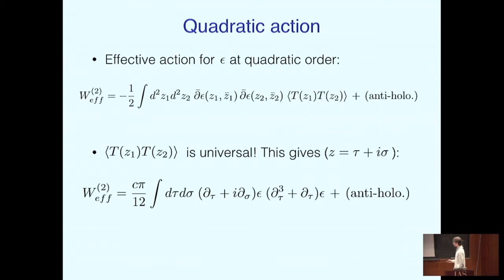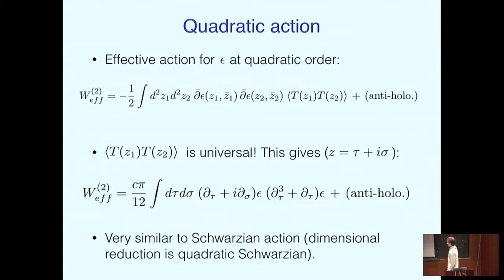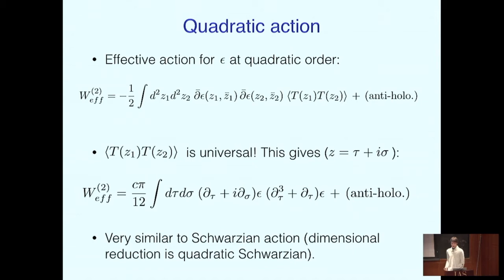At least perturbatively, if I write down the resulting effective action at second order, I have two insertions of the anti-holomorphic derivatives of epsilon, each coming with a stress tensor. The quadratic action for these reparametrization modes is determined by the two-point function of the energy-momentum tensor, which is universal and fixed by conformal symmetry. This effective action turns out to be a local action, and it looks very familiar because it almost looks like the Schwarzian action. If you drop the sigma derivative — naive dimensional reduction — this is precisely the quadratic approximation to the Schwarzian, with the difference being the additional spatial dependence and a second copy from the anti-holomorphic modes.